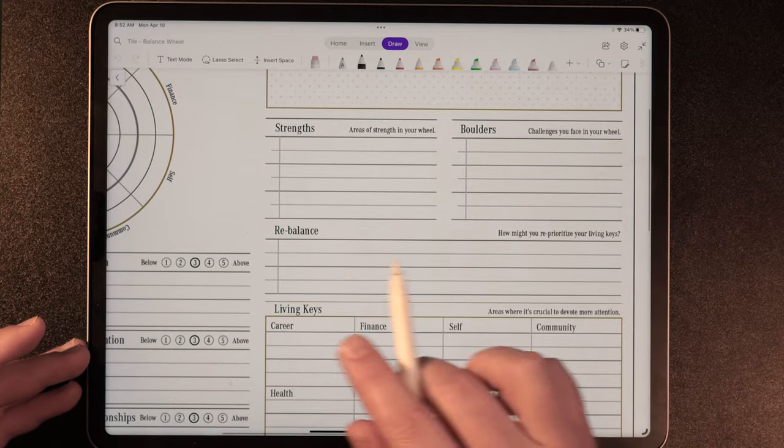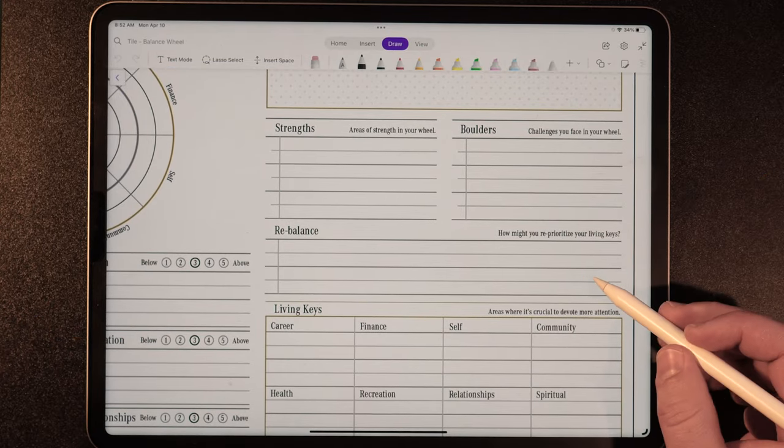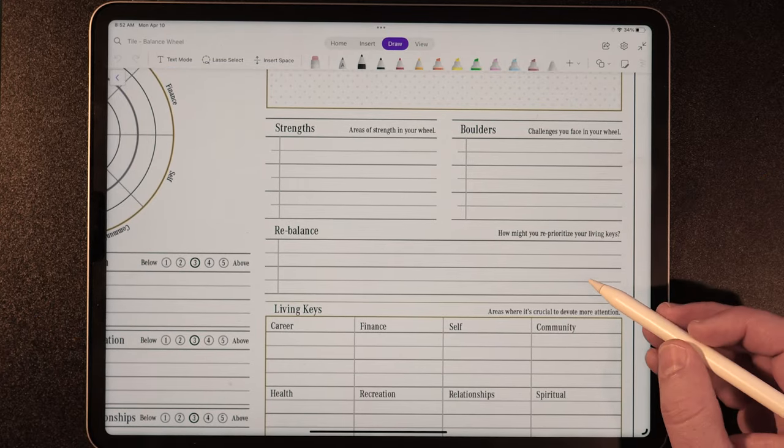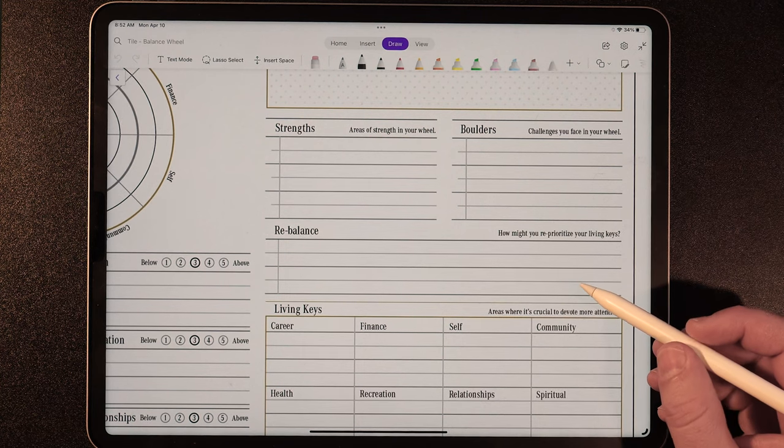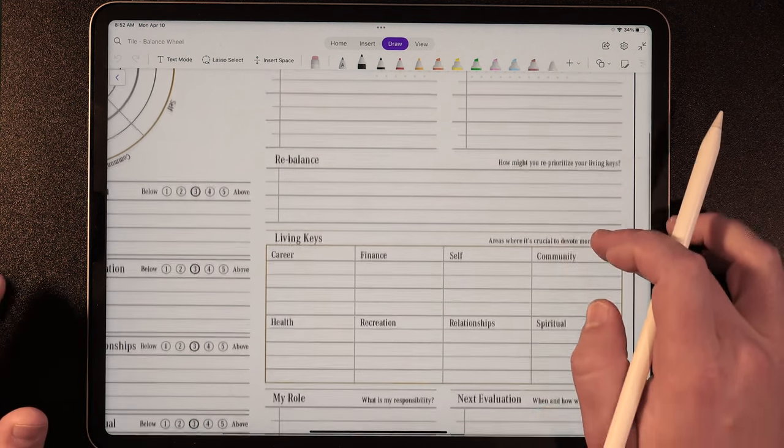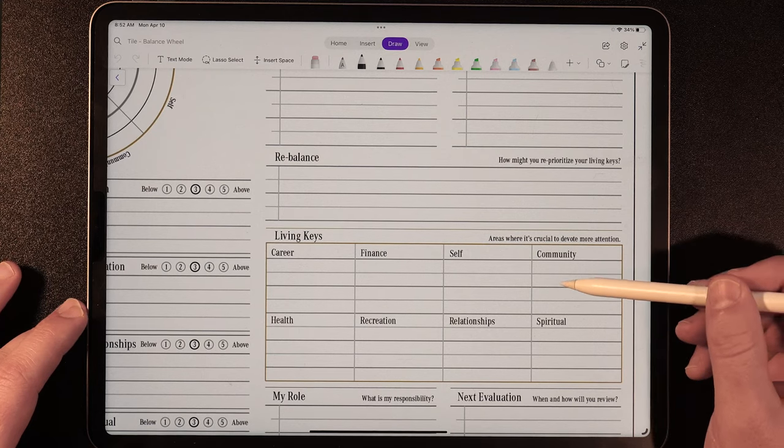And then from there, what are the strengths in your wheel? And where are some of the challenges that you're facing? Let's talk about rebalancing. How are we going to reprioritize our life so that everything is on the mark?